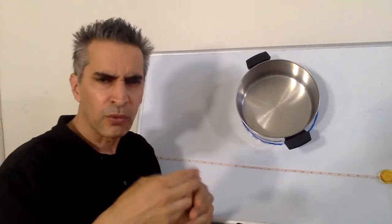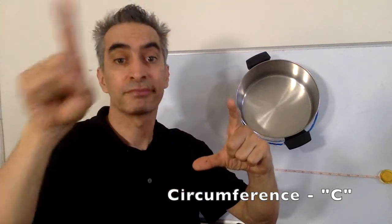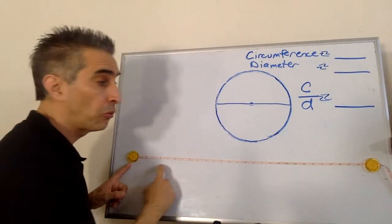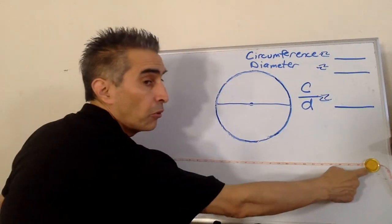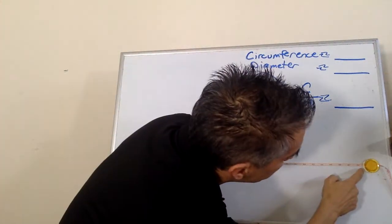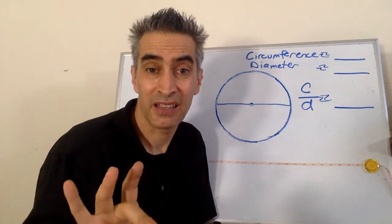The distance that this line makes is called the circumference and this is how you write it. The math symbol for circumference is a capital C. This line measures about 28 and 5 eighths inches.